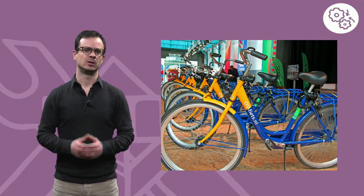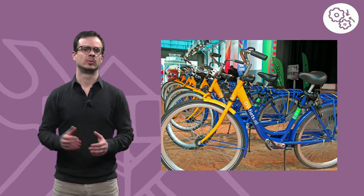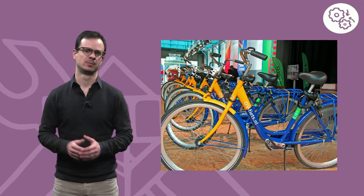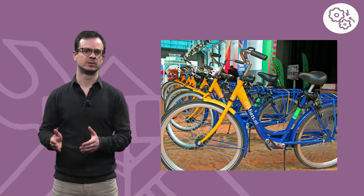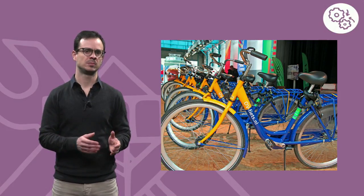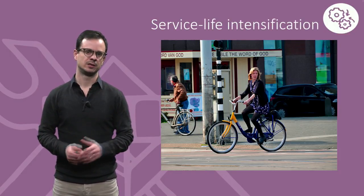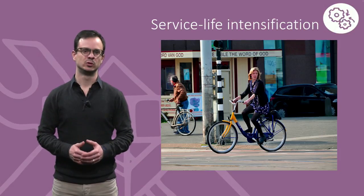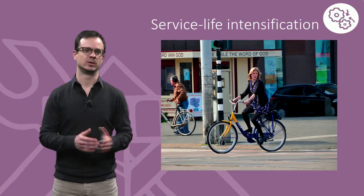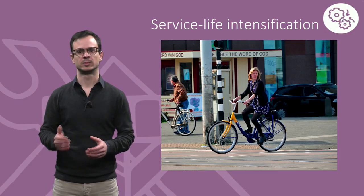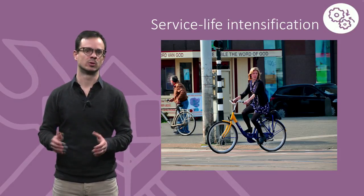A second type of reuse activity involves the shared use of a product by a large number of users, one after the other. If you live in a large city, you might have seen places where you can rent a bicycle for a day or even just for a few hours. As a user, you no longer need to own the bicycle but instead only get access to it for as long as you actually need to use it. We will call this type of reuse service life intensification. This has the advantage from a circular economy perspective of reducing the number of products that have to be produced in the first place, as more than one user can take advantage of the same bicycle even over the course of a single day.